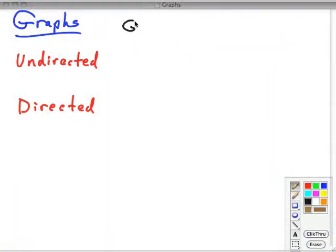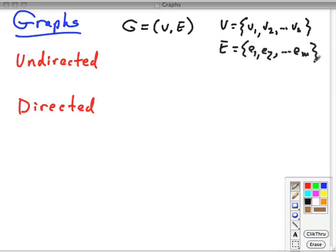We represent graphs using the notation G equals V E, where V is the vertices and E is the edges. And E is a subset of the cross product of the vertices. Now graphs can be undirected or directed.